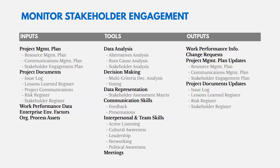To monitor stakeholder engagement, you can use alternatives analysis, root cause analysis, stakeholder analysis, and voting. If an issue can't be resolved with a stakeholder, alternatives analysis may help find a different solution. Communication skills, feedback, and presentations can show stakeholders that progress is being made. Interpersonal skills like active listening, cultural awareness, and leadership are also important — it definitely takes soft skills to work through and address issues with stakeholders as they arise.